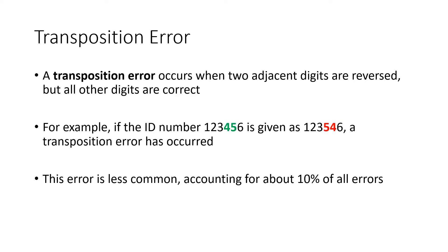Less common, but still fairly common, is what's called a transposition error. A transposition error occurs when two adjacent digits are reversed. So in this example, our ID number is 1, 2, 3, 4, 5, 6. And if when we're typing it in, we accidentally type 1, 2, 3, 5, 4, 6, we've done a transposition error. The 4 and the 5 are supposed to be next to each other in that order, and instead we swapped them. Still about 10% of all errors that occur are these transposition errors.